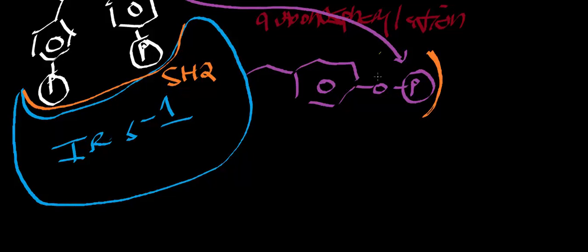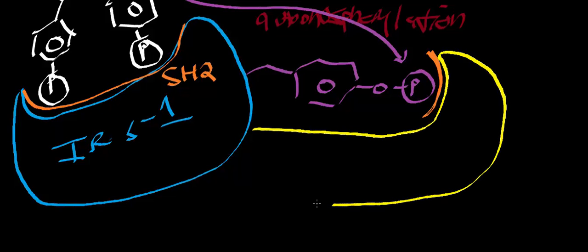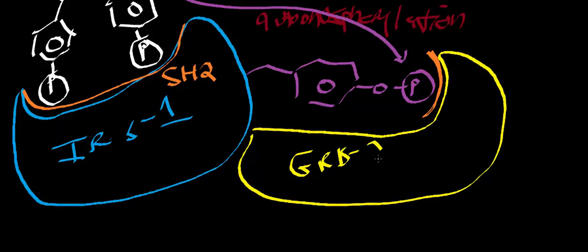IRS-1 is going to bind another protein that also has an SH2 domain — this protein is called GRB2, which stands for growth factor receptor-bound protein 2. GRB2 also has an SH2 domain and it's bound to the phosphotyrosine residue of IRS-1, because IRS-1 got phosphorylated by the tyrosine kinase receptor. So GRB2 can also bind there as well.